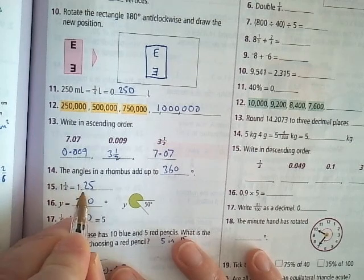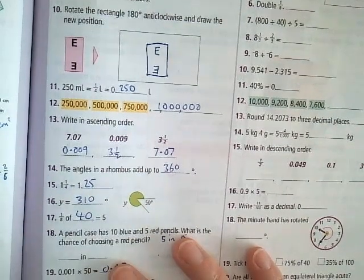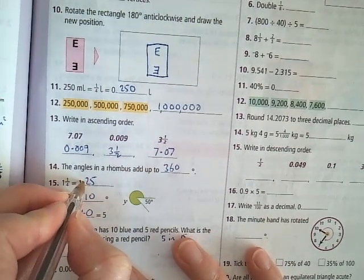Number 15. One and one quarter is 1.25. So the decimal point there, it's not too easily seen.